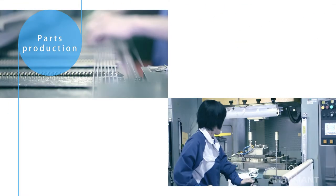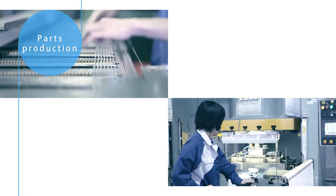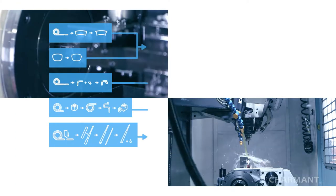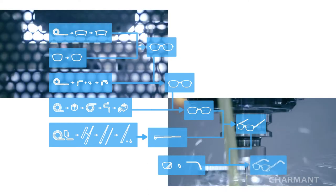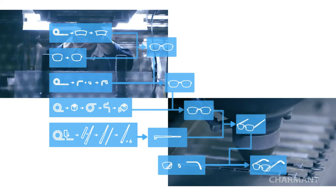Each frame undergoes over 200 processes before completion. Due to the large number of parts used in eyewear frames, various parts are created in different areas of the factory to be later assembled into a complete frame.